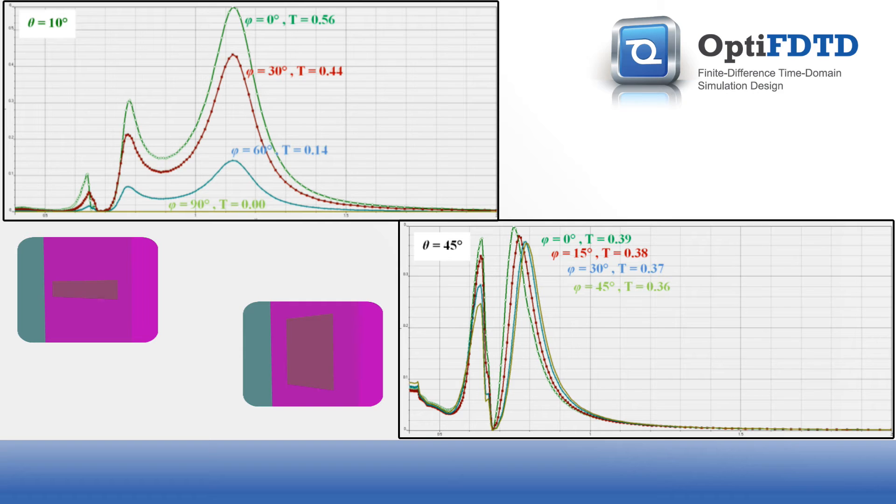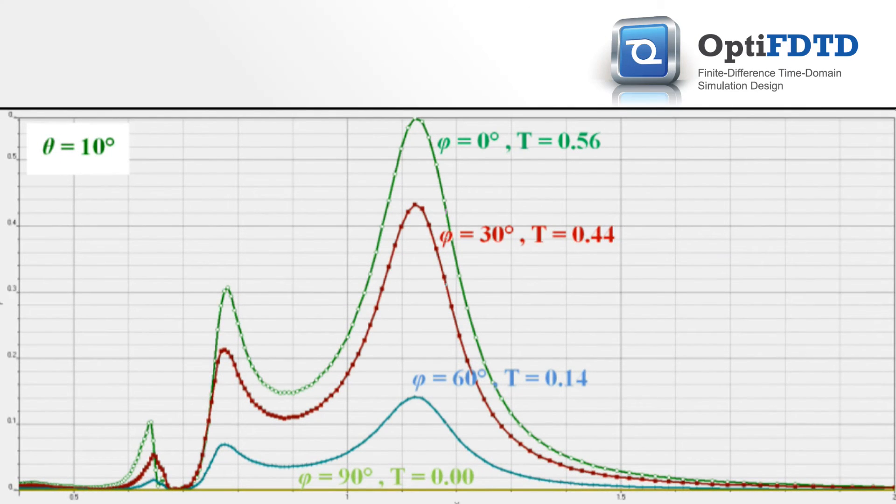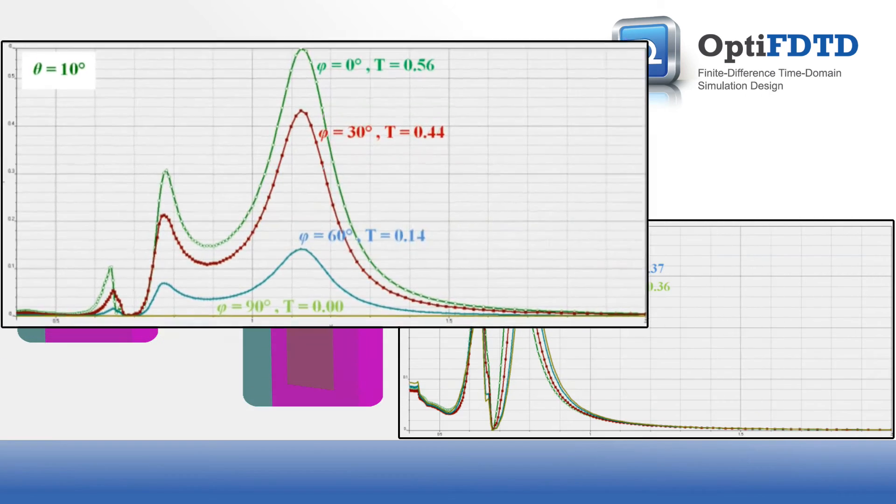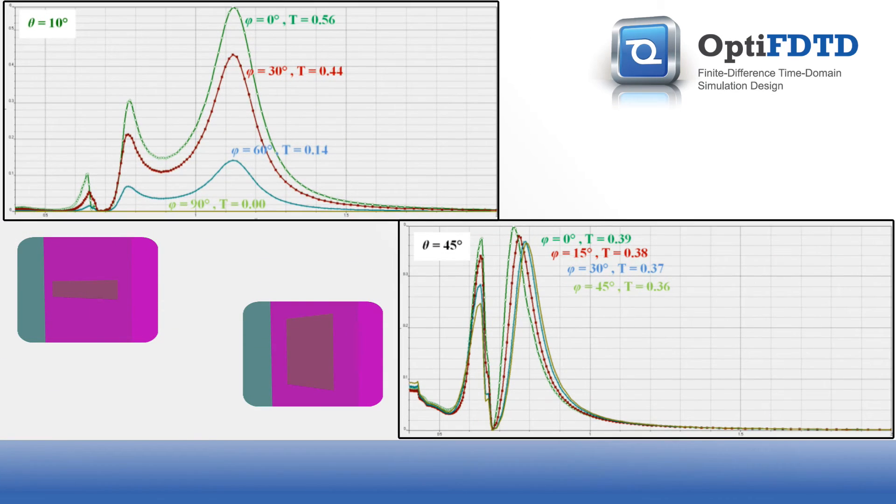These two cases of a rectangular and square air hole can be examined more closely. If the orientation of the rectangle is changed, the general trend is that the transmission decreases. This is expected since the tangential field at a conductor interface must be zero. Since the input light is y-polarized, as the rectangle orients itself parallel to the input light, the transmission drops.